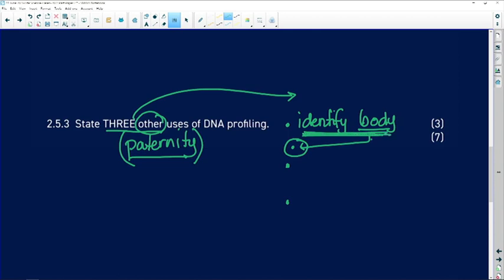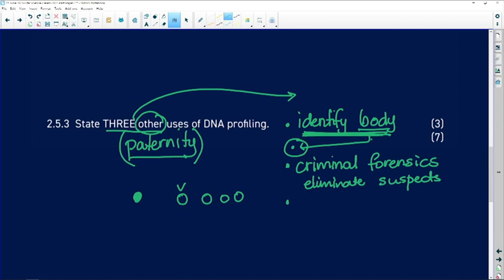So we could identify bodies in the field of criminal forensics. We are able to possibly eliminate suspects if we have a blood sample collected at a crime scene and we have the victim's blood group, and we have three other blood groups of suspects that we think could have been guilty for this crime. When we match one of the suspects to the sample, we are eliminating the other suspects, so it's used in criminal forensics.